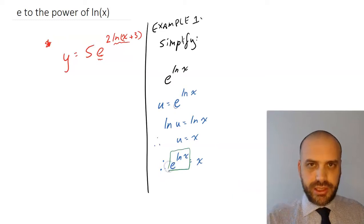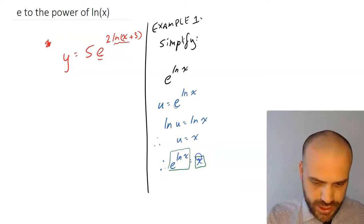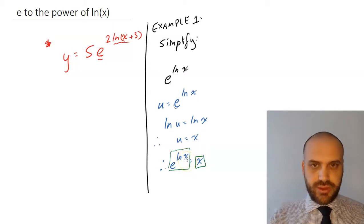Which therefore means that e to the ln x is equal to x. This is pretty nice because we get to take something that's pretty ugly, e raised to the power of a natural log, and write it just as x, as that value right there.